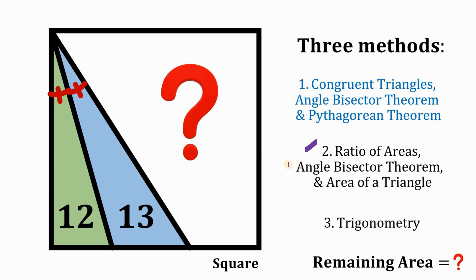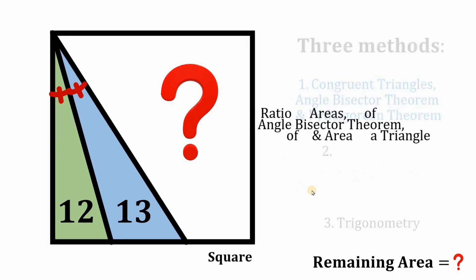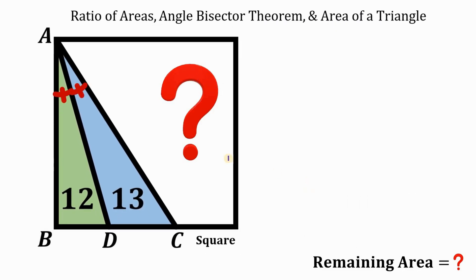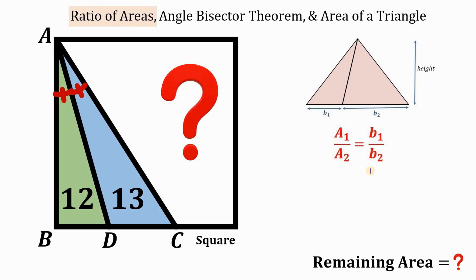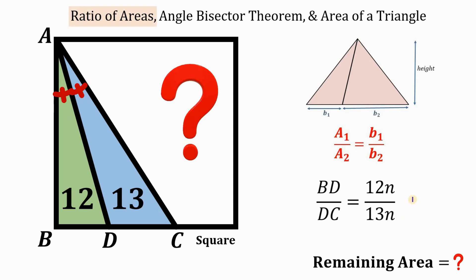Now for solution number two, using ratio of areas, the angle bisector theorem, and the area of the triangle. When two triangles share the same height, the ratio of their areas equals the ratio of their bases. So BD/DC = 12/13. Since this is a ratio, BD = 12n and DC = 13n, where n is any real number.